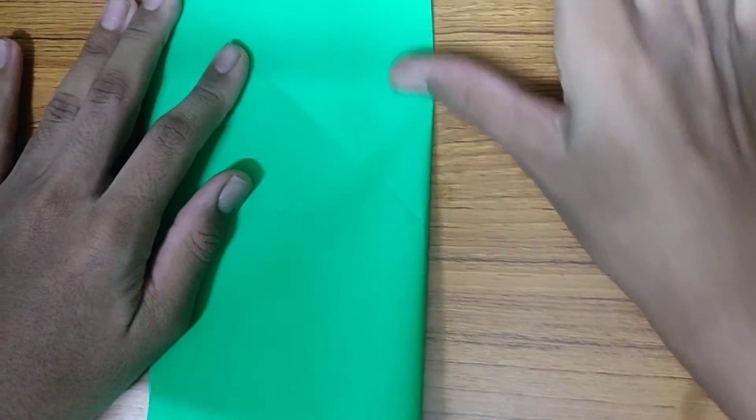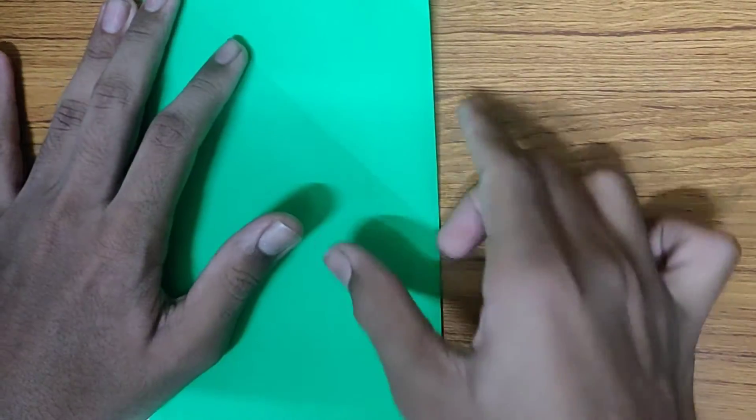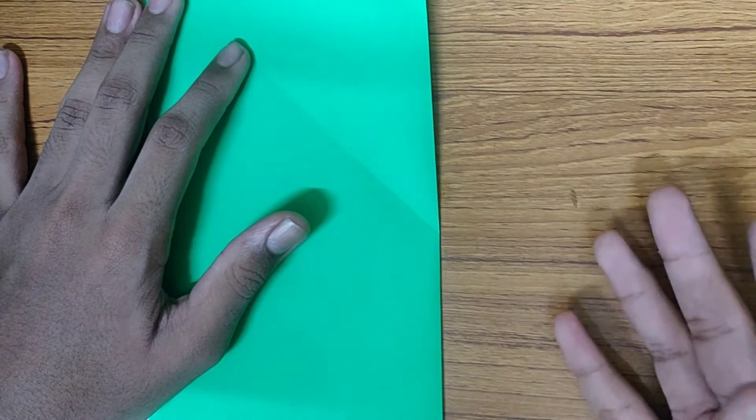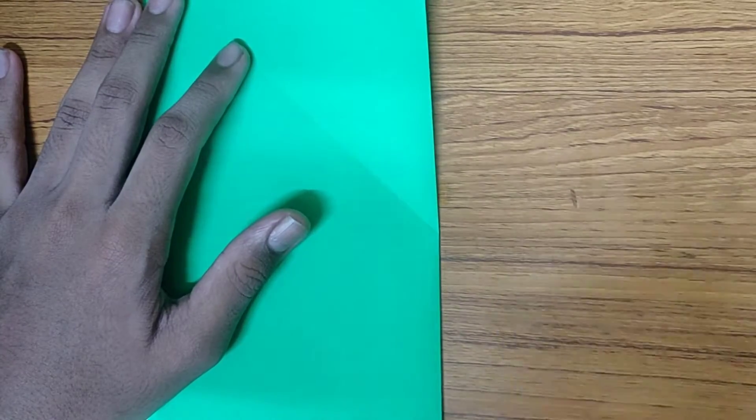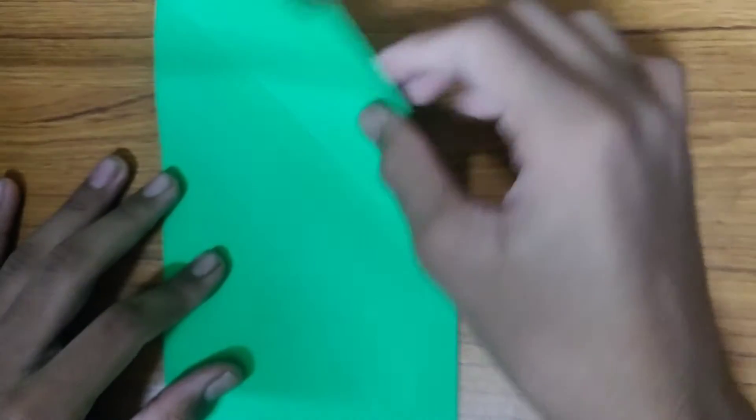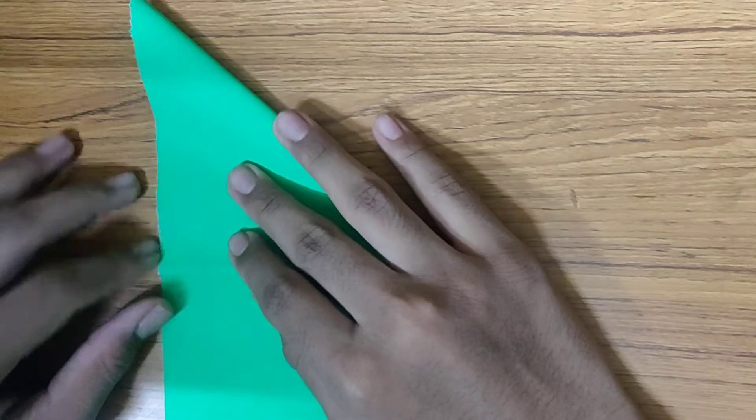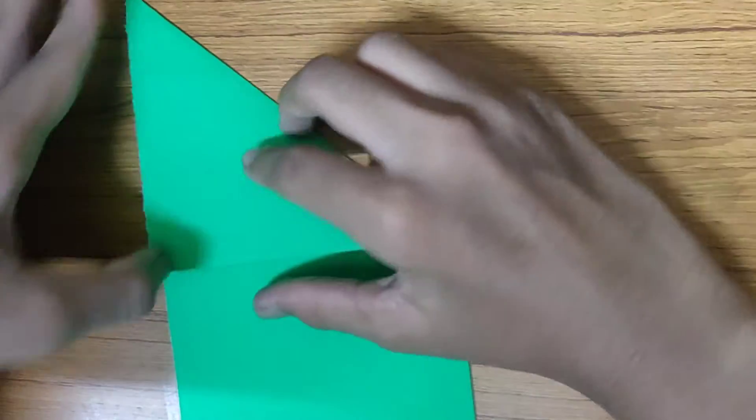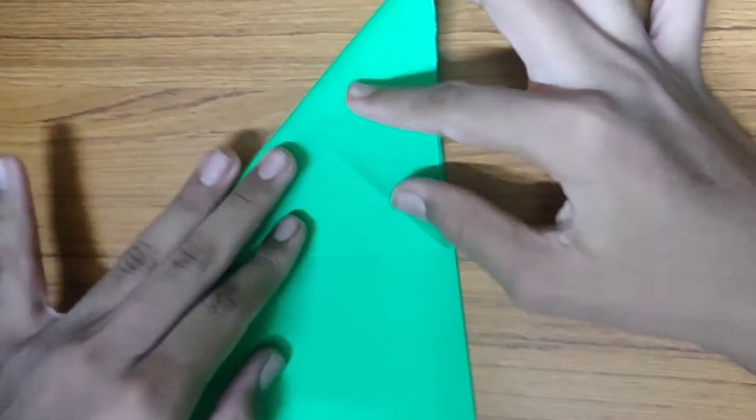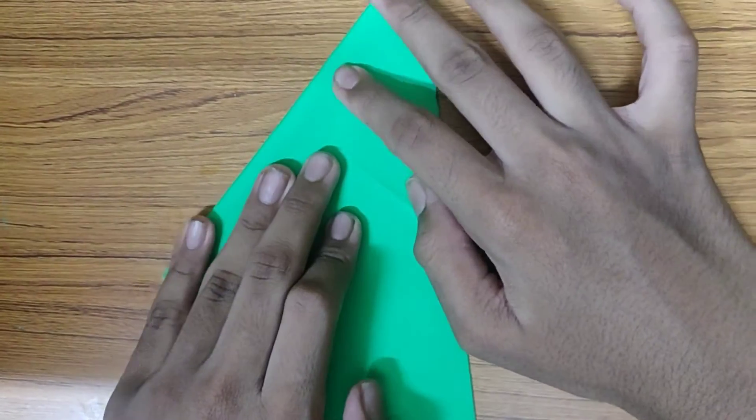This is quite an easy origami, friends, so origami beginners could of course start with this origami, and I'm pretty sure you will be able to nail this one. Now let's fold like this, crease it, unfold it, and repeat the same fold on the other side as well.